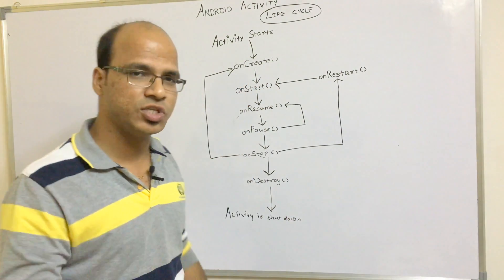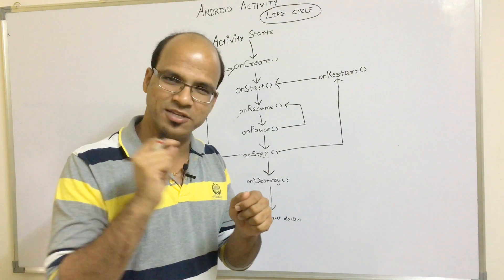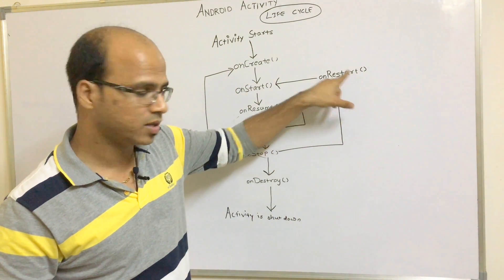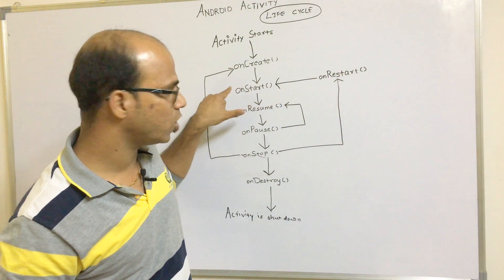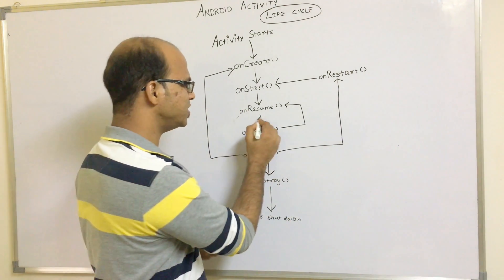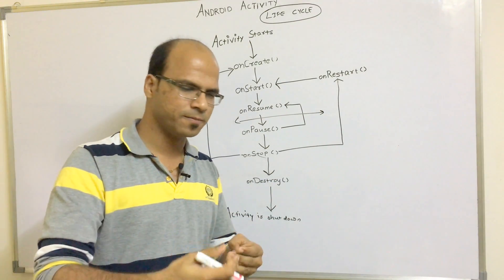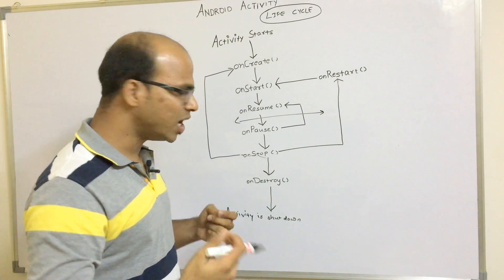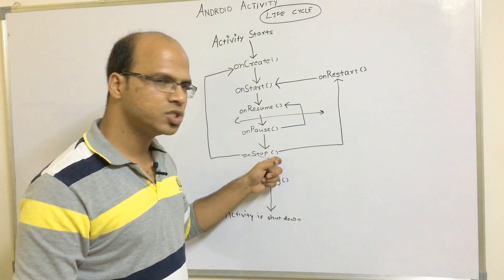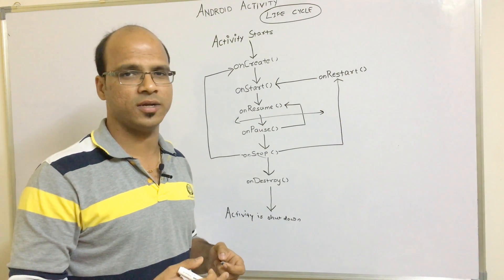When you resume your app by pressing the home button, going to recent apps, and clicking on it, it will go to onRestart, then onStart, then onResume. So you are using your activity again. And when you minimize again, it calls onPause, onStop, and when you reopen it, it goes to onRestart.